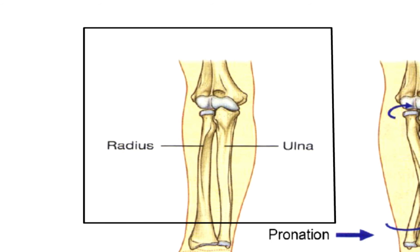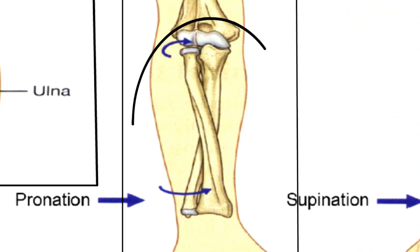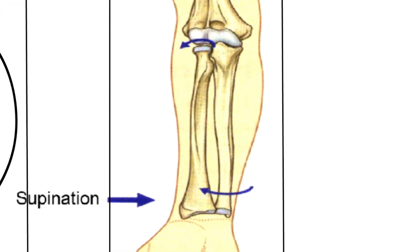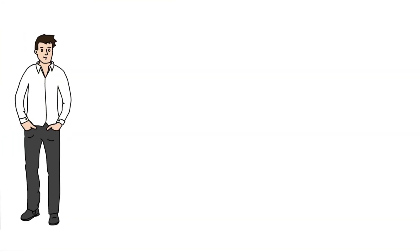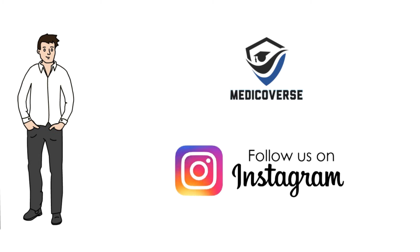This image depicts the palm with the radius and ulnar bone. There are two positions: pronation, where you have the dorsal side of the palm, and supination, where you have the ventral side of the palm. That's it for today — don't forget to subscribe to the channel and follow us on Instagram.